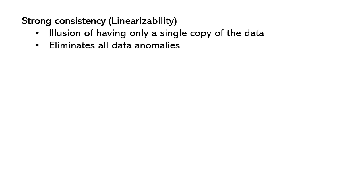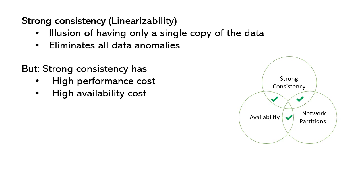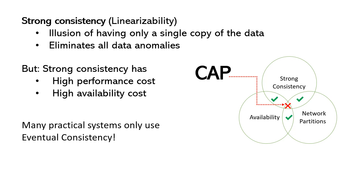In an ideal situation, we want strong consistency, which is also known as linear visibility. Strong consistency provides an illusion of having only a single copy of the data, thus completely eliminating all data anomalies. But it comes with high performance and availability costs. The well-known CAP theorem says it is impossible to achieve strong consistency for an always-available system in the presence of network partitions. Due to the costs of stronger consistency models, many practical systems use eventual consistency, which guarantees that eventually all replicas converge. However, other data anomalies still exist that make application development complex.